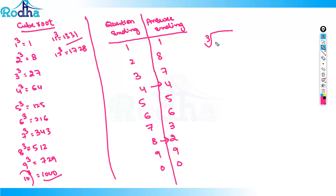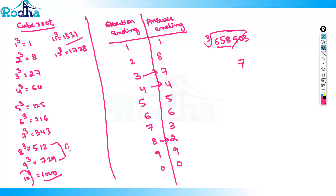Cube root of 658503. It is ending with 3, so the answer will end with 7. Cut the last 3 digits. Remaining is 658. 658 falls between 8 cubed (512) and 9 cubed (729). The least is 8, so the answer is 87. Because of this method you are able to solve it in just 2 seconds.